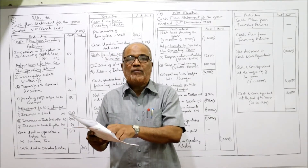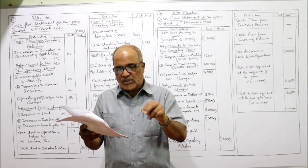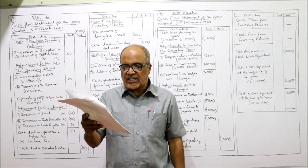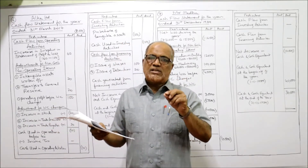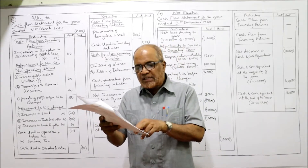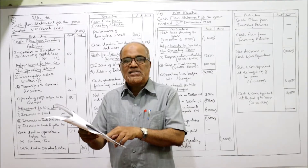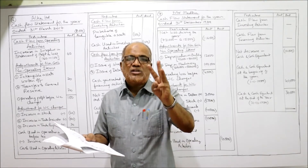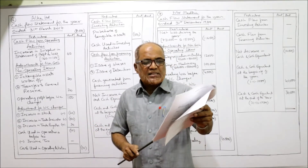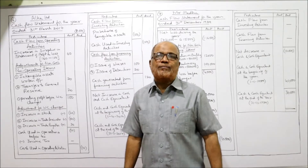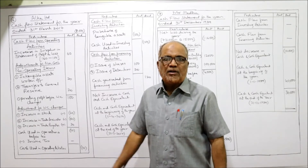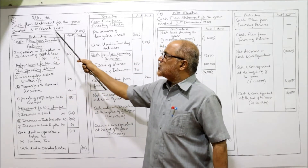Reserves and surplus: last year 160, current year 240. We need the breakup — what these reserves and surplus constitute will be given in the notes. In the notes to accounts, two items are given: general reserve, and surplus in the statement of profit and loss. The surplus in the profit and loss: last year 100, current year 160. All figures are rupees in thousands — three zeros are omitted. So the increase in surplus is 60.